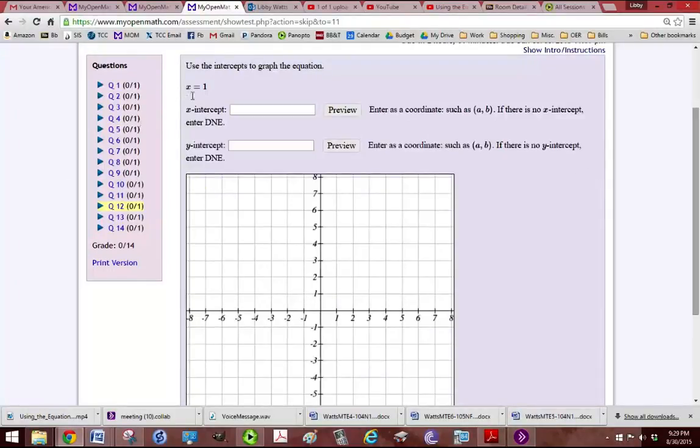We're trying to graph the line x equals 1, so x equals 1 is right here, so we can click on that point and then anywhere else where x equals 1 you can click.